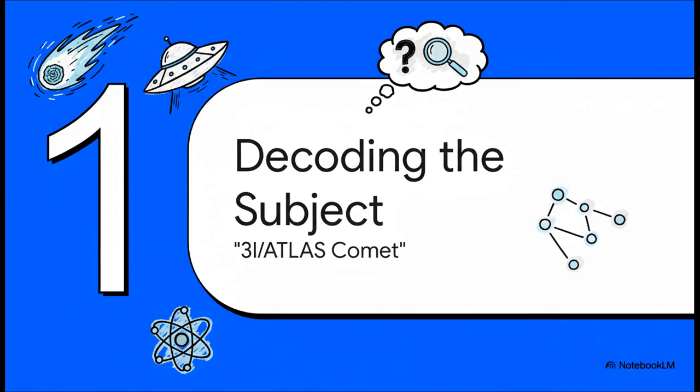To really get what this question is all about, we've got to break down the subject itself. So what in the world is the 3i/Atlas comet? Because it's not just some random name. It's a scientific label and it's actually packed with clues.